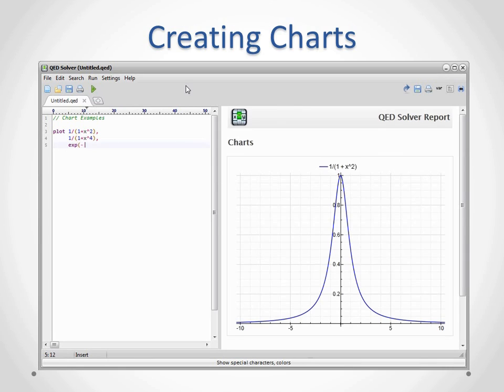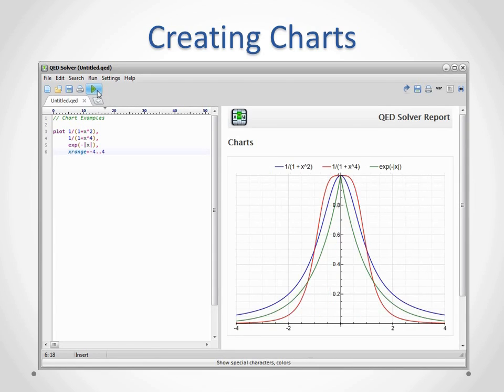Now we add additional expressions to plot. For example, 1 over 1 plus x to the 4th power, and another expression, exponential of negative the absolute value of x. Now we restrict the x range from minus 4 to 4, and set the x-axis label to x.